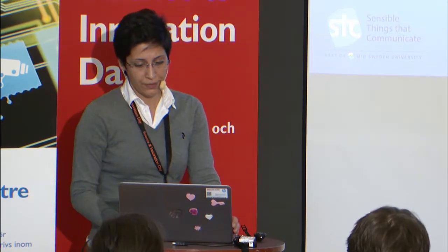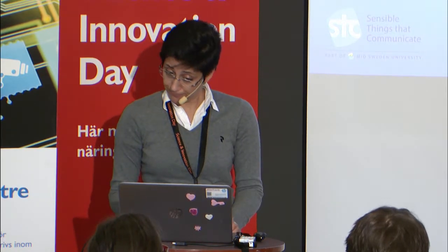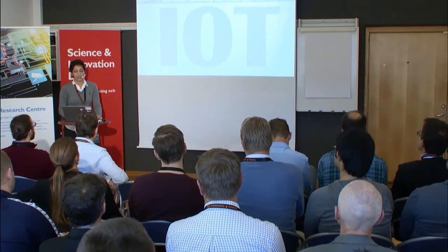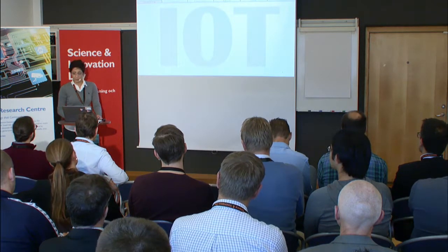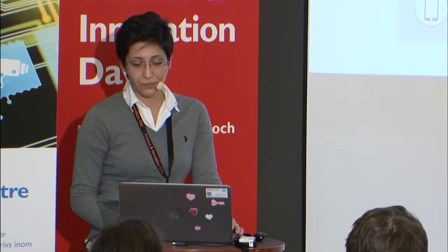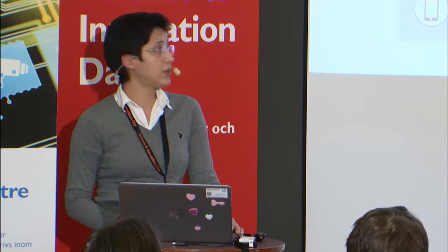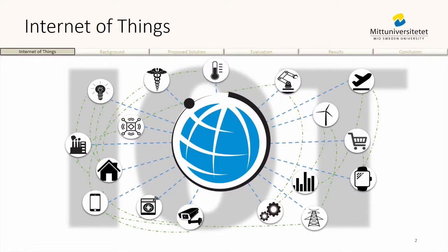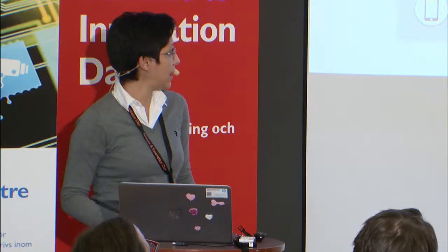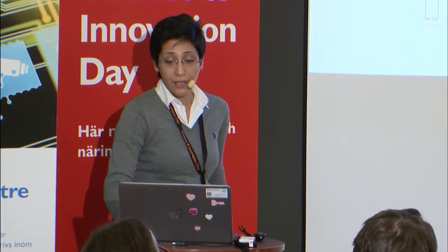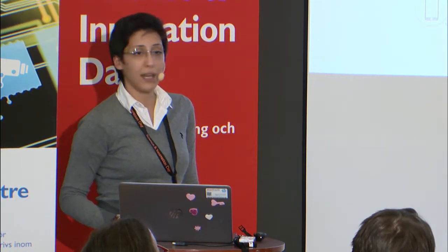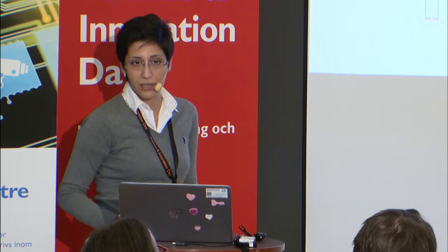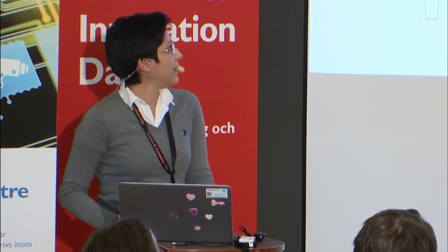IoT, the Internet of Things, presents the idea of a connected world where objects or things become smart by connecting to the Internet and exchanging information to improve their functionalities. Essentially, IoT can be described as a well-connected set of things that can communicate and exchange information to carry on collaborative tasks, and by doing so, imitate intelligent behavior.